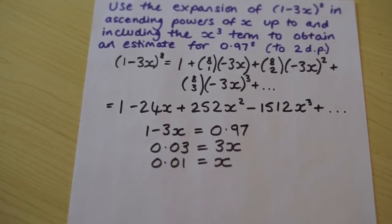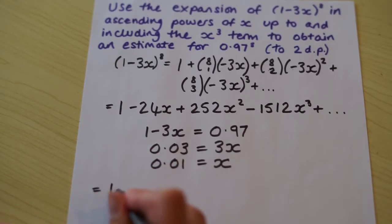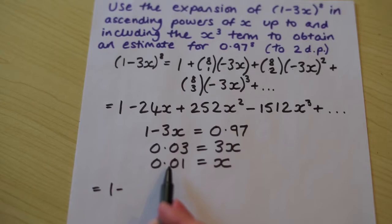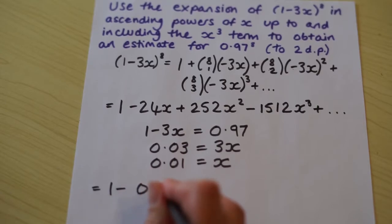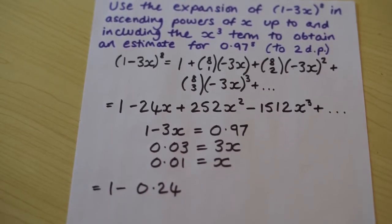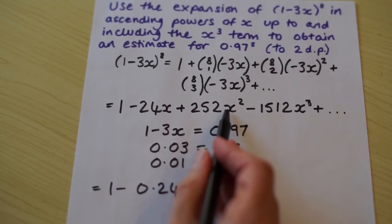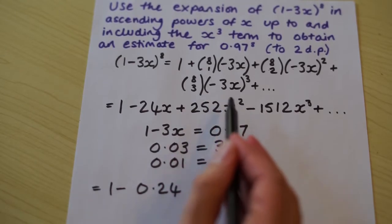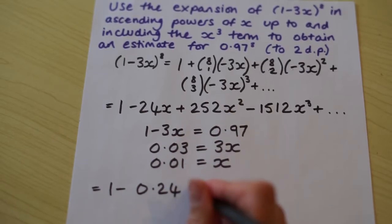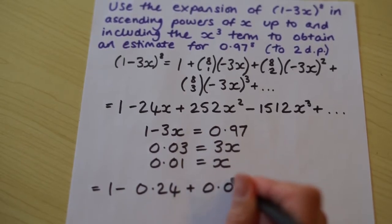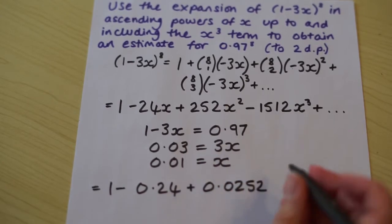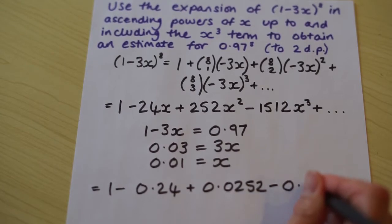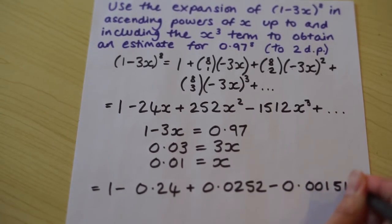So let's do that. So 1 is 1. Minus 24 multiplied by 0.01 is minus 0.24. So let's substitute 0.01 into this. When we do that, we discover it is that. When we substitute x equals 0.01 into this term, we discover that it is this.